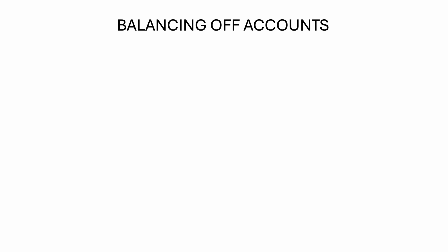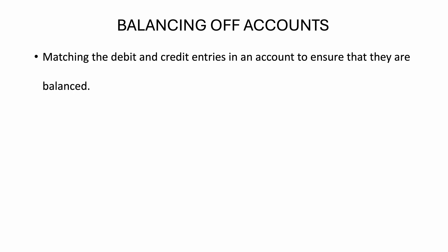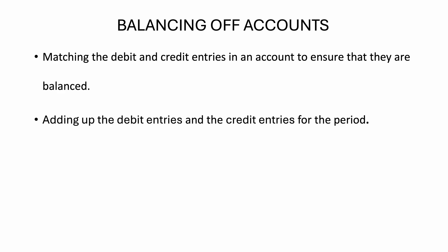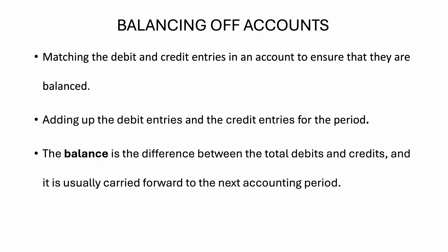In this tutorial, I'm going to give you an explanation of what balancing off accounts is. Balancing off accounts involves matching the debit and credit entries in an account to ensure that they are balanced. This is done by adding up the debit entries and credit entries for the period. The balance is the difference between the total debits and credits, and it is usually carried forward to the next accounting period.